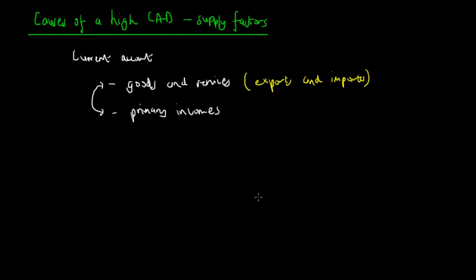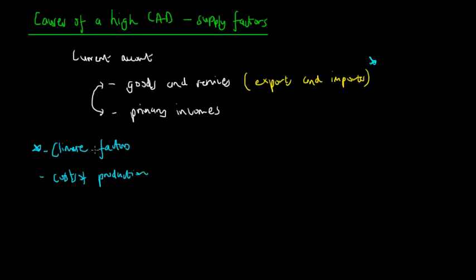We talked about consumer confidence, business confidence, and incomes — if we have more income we're going to import more. But in other cases we have supply side factors. Supply side factors include: firstly, climate factors; secondly, cost of production; and lastly, wages, which can be a subset of cost of production.